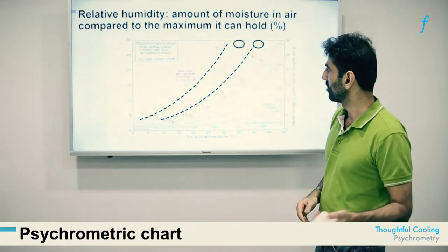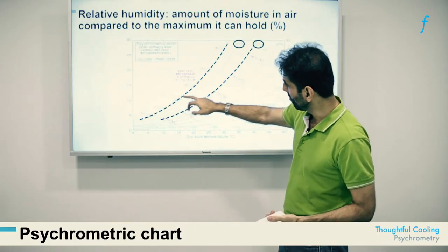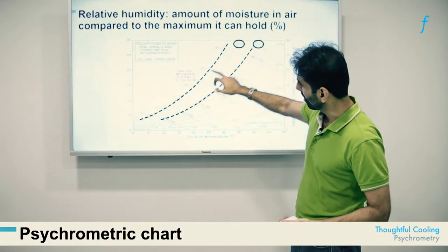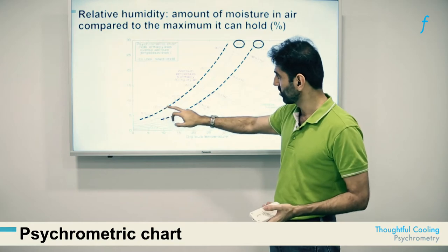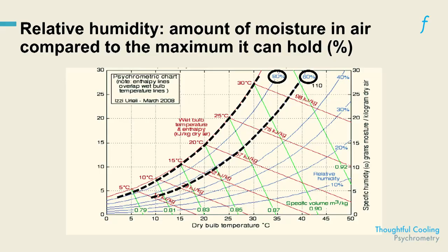This is how to think through the confounding idea of constant specific humidity but changing relative humidity. The saturation line — also called the dew point line — is a very important line in many assessments, and we will demystify it in subsequent slides.